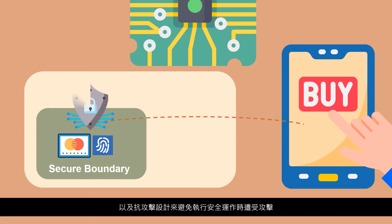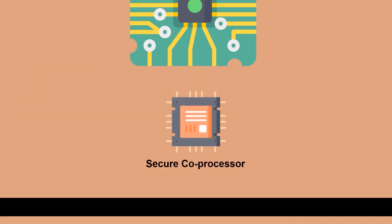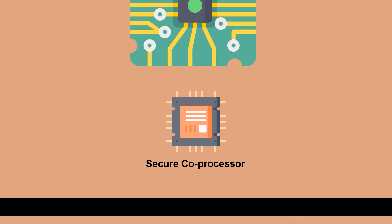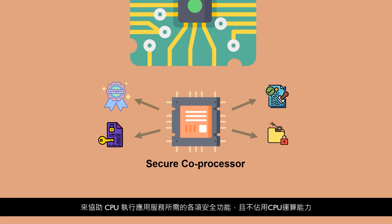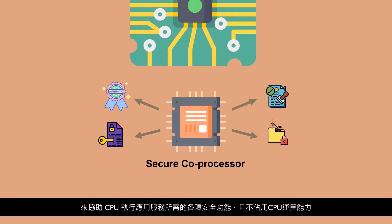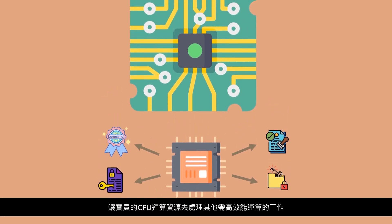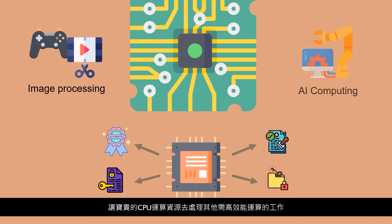Anti-tampering designs should also be implemented to protect secure environments from being attacked. With these in mind, an experienced designer would often leverage a secure coprocessor that comes with a hardware root of trust and anti-tampering designs. A secure coprocessor will support the CPU in executing all necessary security functions for applications and services without taking computational power off the main CPU, offloading CPU resources, simplifying system design, and enhancing overall performance.